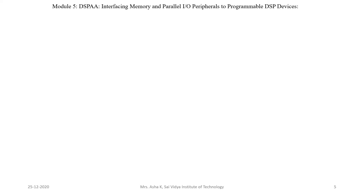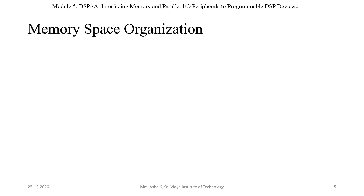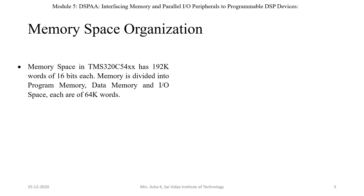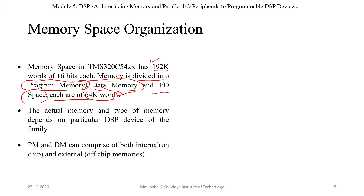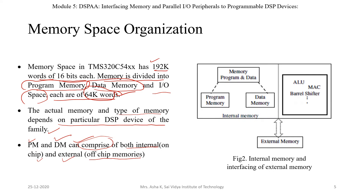Now we will discuss memory space organization — how the memory is organized in the TMS320C54XX processor. It consists of 192K words of memory space of 16 bits each. The memory is divided into program memory, data memory, and input-output space, each of size 64K words. The actual memory and type of memory depends on the particular DSP device of the family. The program memory and data memory can comprise both internal (on-chip) as well as external (off-chip) memories. The figure shows the internal memory and interfacing of external memory.